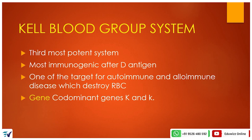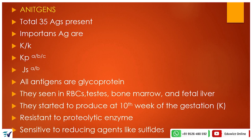There are a total of 35 antigens in the Kell system. The important antigens include K and k, KpA, KpB, KpC, and JsA and JsB. These antigens are glycoproteins and are found on RBCs, testes, bone marrow, and fetal liver, as well as other lymphoid organs.